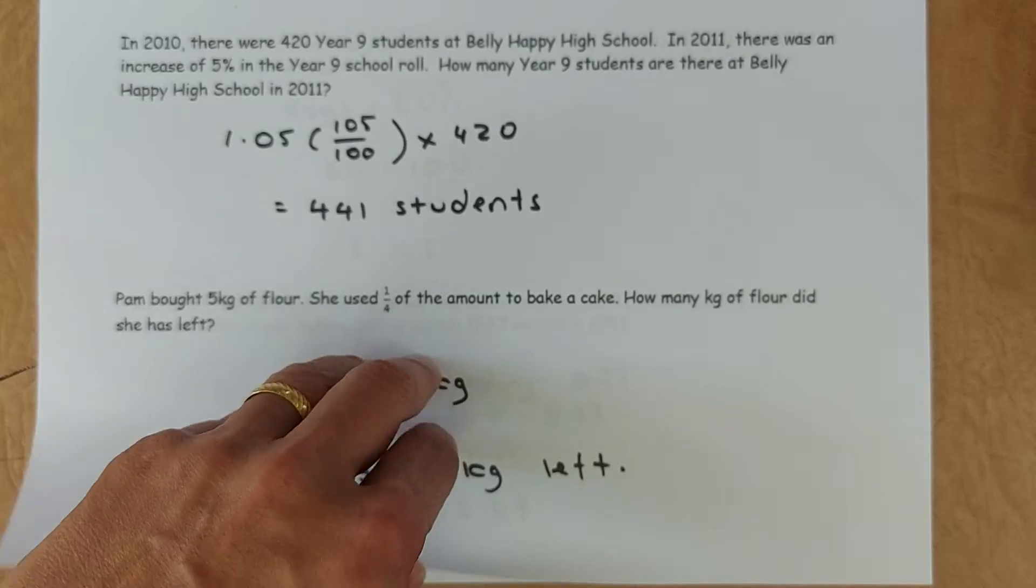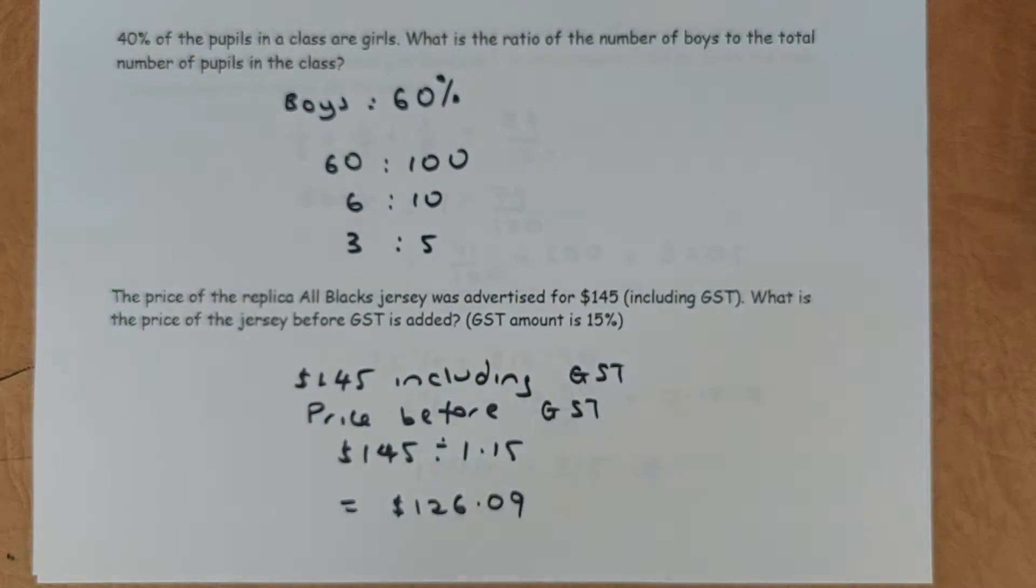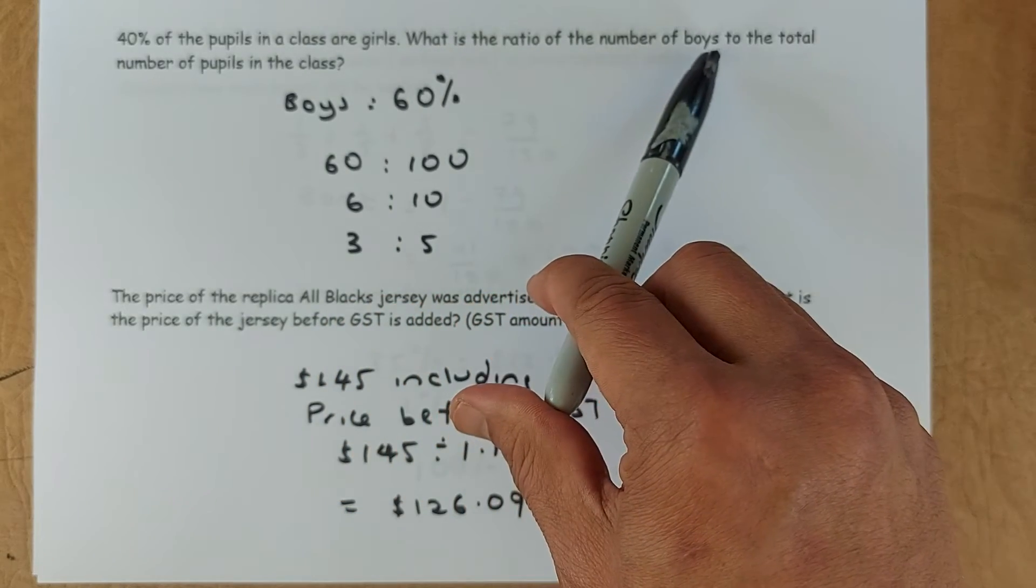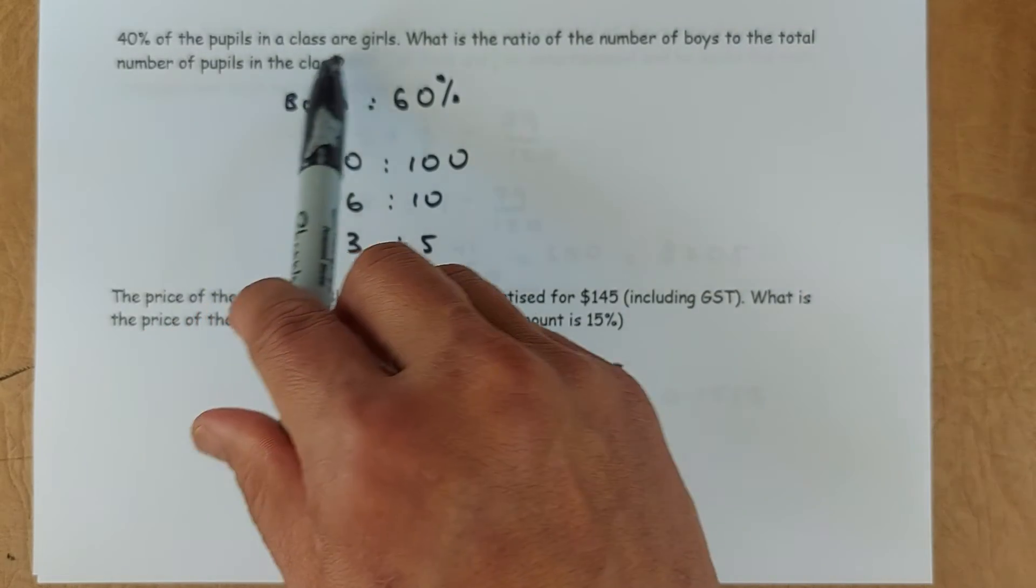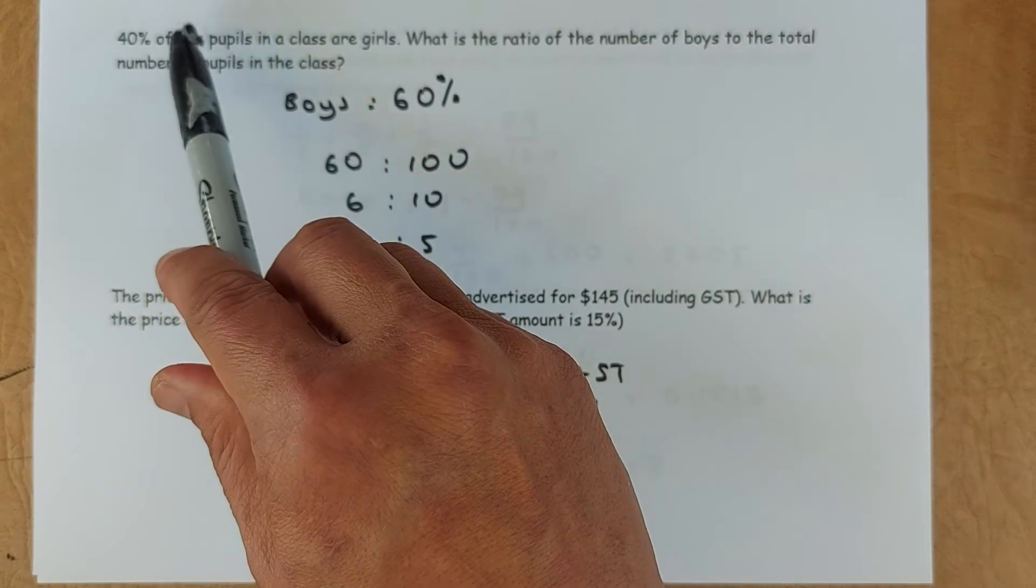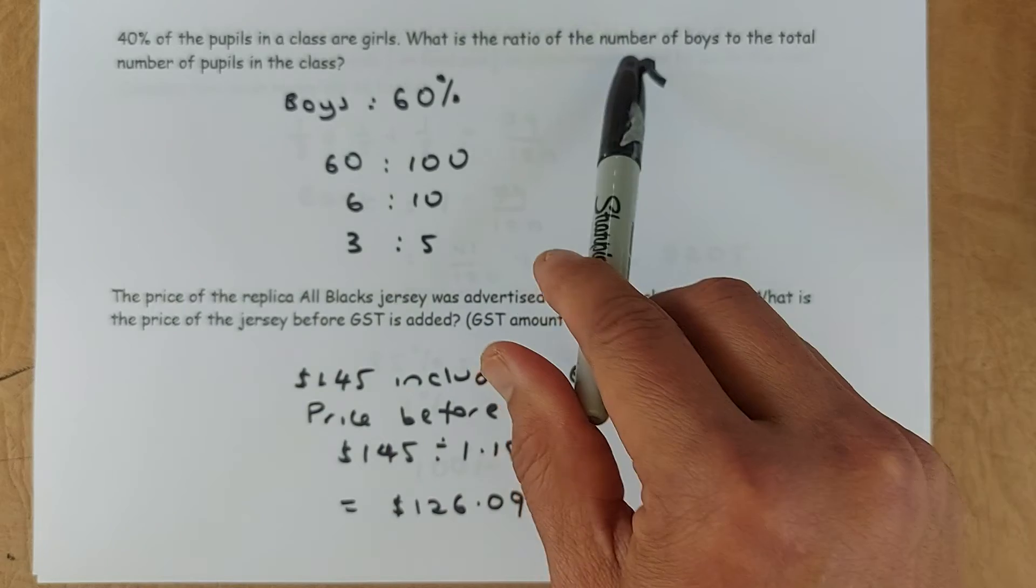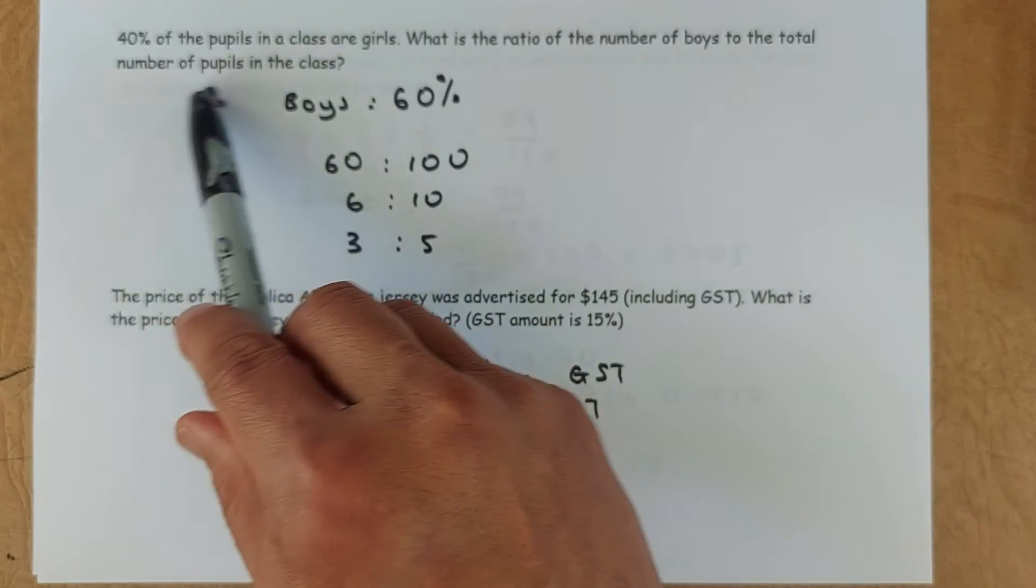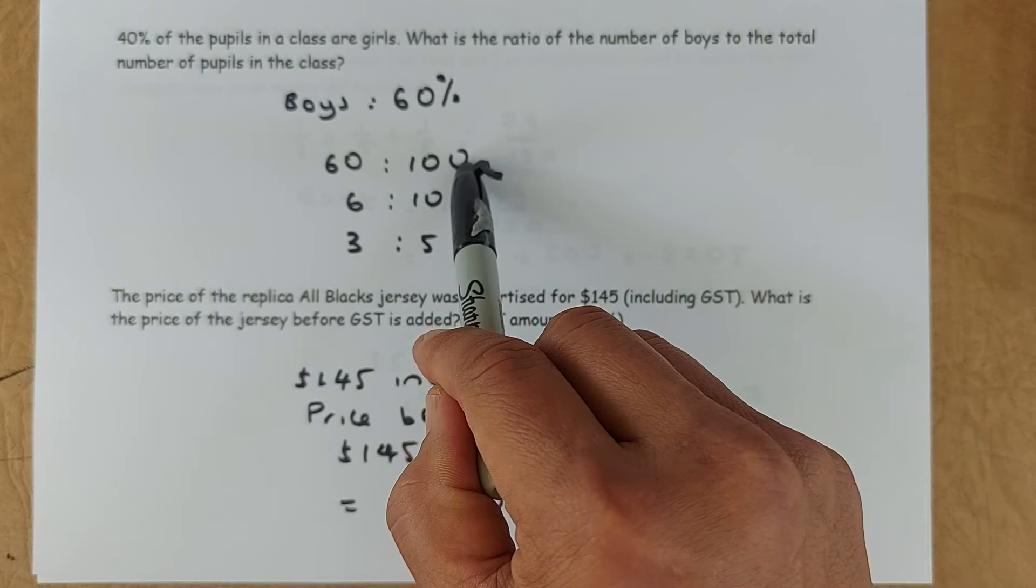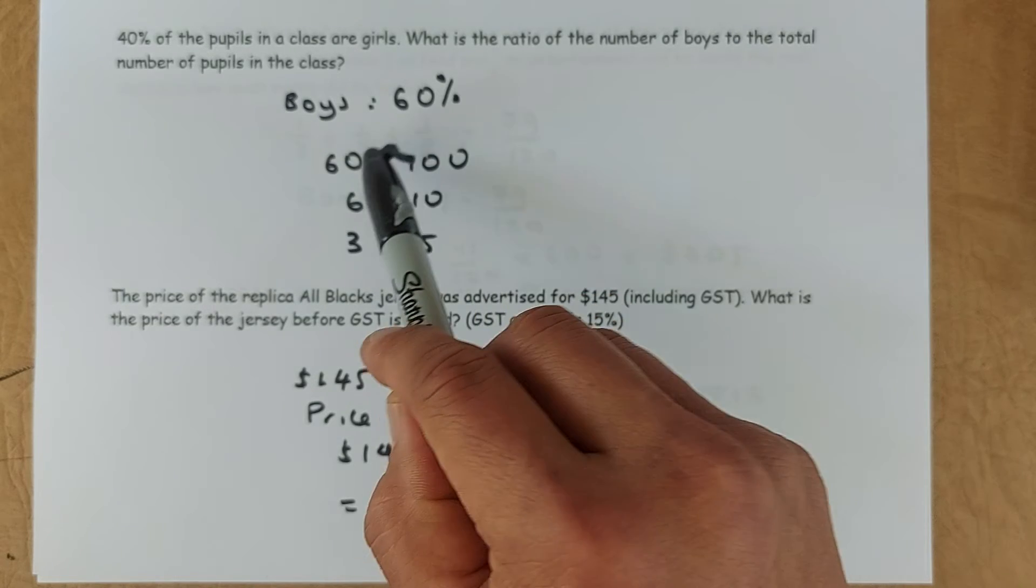So let's go to the next two questions. Now we're going to get a bit harder now. 40% of the students are girls. What is the ratio of number of boys to the total number of pupils in the class? So boys is 60% because 100% minus 40% is 60%. So they asked you to find the ratio to the total number of pupils in the class. So 60% for boys over 100% because the boys and girls is 100%.